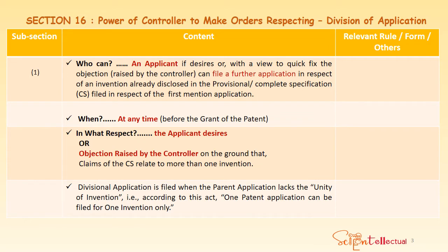This first-mentioned application is the parent application, out of which the divisional will be filed by the applicant. When can it be filed? Any time before grant of patent. In what respect? If the applicant desires, or an objection has been raised by the controller, that the claims of the complete specification relate to more than one invention. As we know, one patent is for one invention; if any application includes more than one invention, then the controller may ask to divide it and file a divisional application. A divisional application is filed when the parent application lacks unity of invention — one patent application can be filed for one invention only.